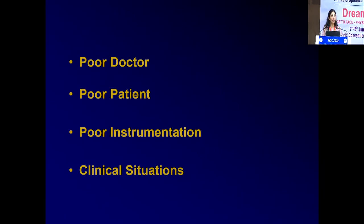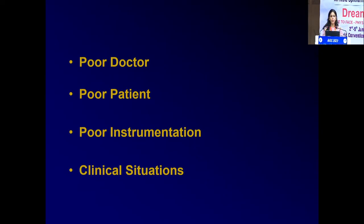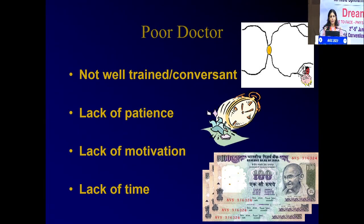What are the difficulties in indirect ophthalmoscopy? There are basically four headings: a poor doctor, a poor patient, poor instrumentation, or clinical situations. A poor doctor means one not well-versed in the technique — lacking training, patience, motivation, or time. A poor patient is an uncooperative or pediatric patient. Small children are very uncooperative, very elderly patients who are hard of hearing may not follow instructions, and there can also be apprehensive, mentally challenged patients or communication gaps.